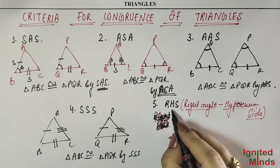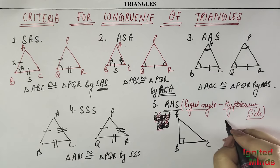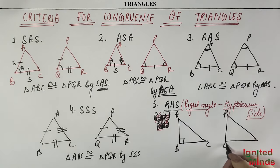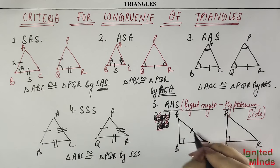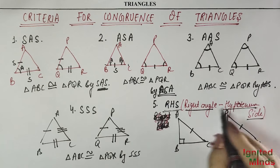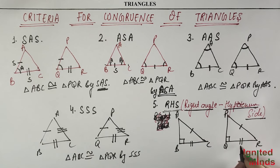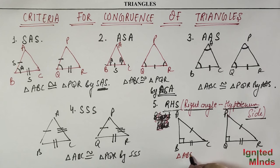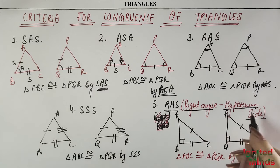Now the last one — RHS — very interesting. This means both triangles are right-angled triangles. In Triangle ABC the right angle is at B, and in Triangle PQR the right angle is at Q. For RHS we need three things: the right angle is equal, the hypotenuse is equal, and one side is equal. So Triangle ABC is congruent to Triangle PQR by RHS — Right Angle Hypotenuse Side.